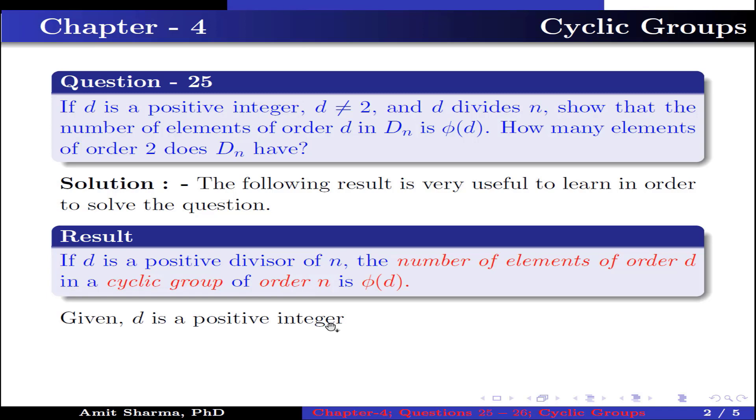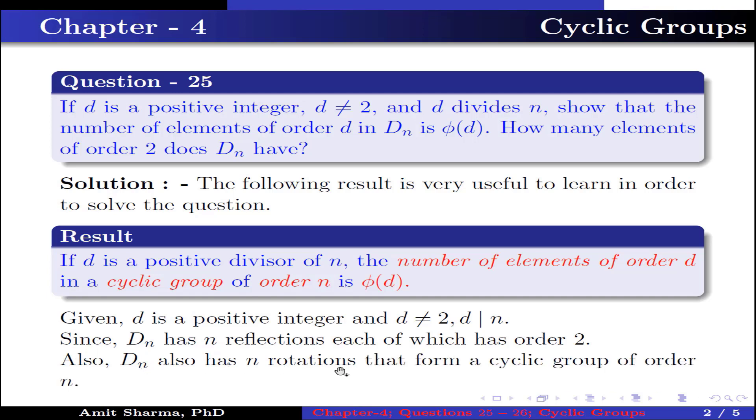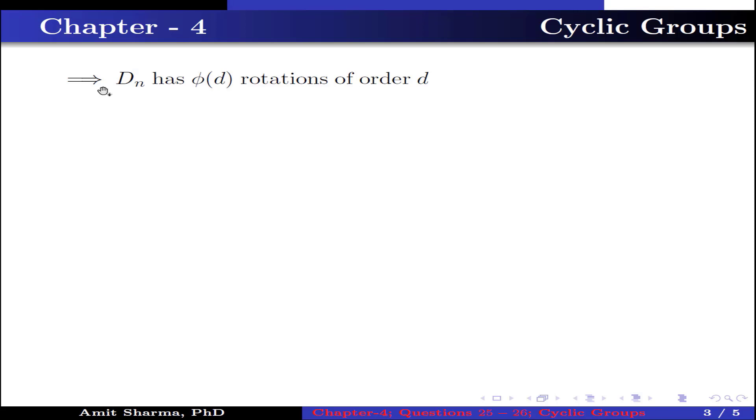Now given d is a positive integer, d is not equal to 2, and d divides n. Since we know that D_n has n reflections, each of which has order 2, and also D_n has n rotations that form a cyclic group of order n. This implies D_n has φ(d) rotations of order d. That is, the number of elements of order d in D_n is φ(d).